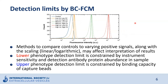Here are some considerations regarding the detection limits of this method. This histogram shows example data for control versus some scenarios of differently bright and differently variable positive signals. Generally, methods to compare controls to varying positive signals along with the scaling may affect the interpretation of results. The lower phenotype detection limit is constrained by instrument sensitivity and detection antibody protein abundance in the sample, and the upper phenotype detection limit is constrained by the binding capacity of the capture beads.